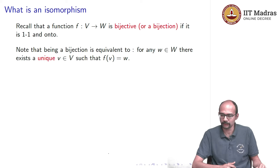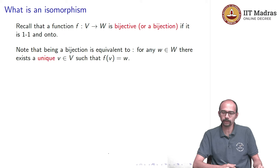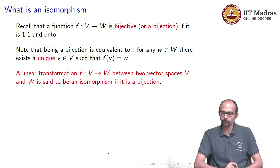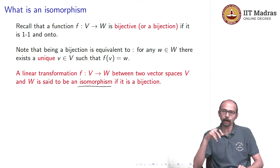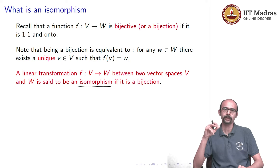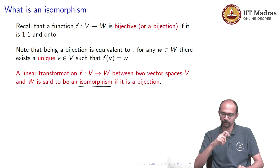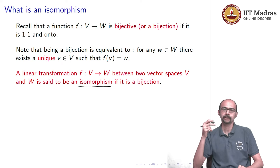A linear transformation between two vector spaces V and W is an isomorphism if it is a bijection. So it satisfies linearity — f(v1 + c·v2) = f(v1) + c·f(v2) — and it is one-to-one and onto, meaning for every w in W there is a unique v in V such that f(v) = w.